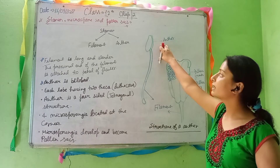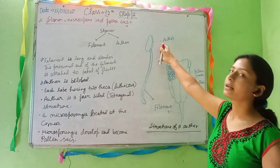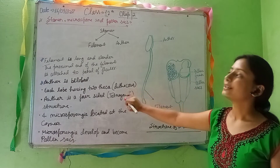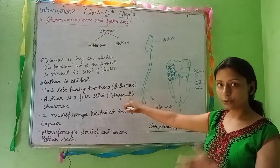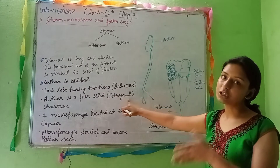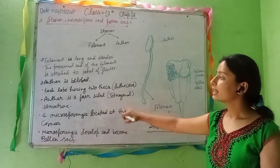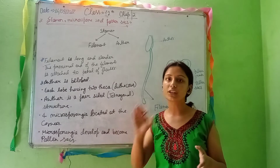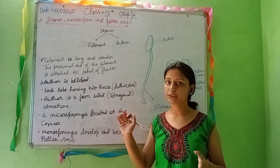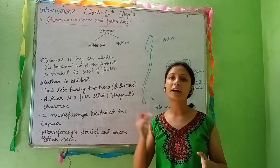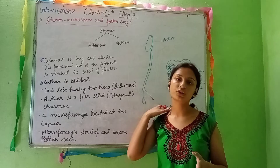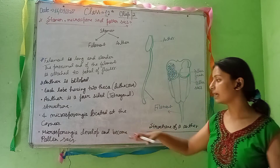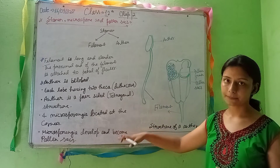So to summarize what we have learned about the stamen: the anther is bilobed, dithecous, and tetragonal, and it contains four microsporangia — one in each corner — which mature into pollen sacs.